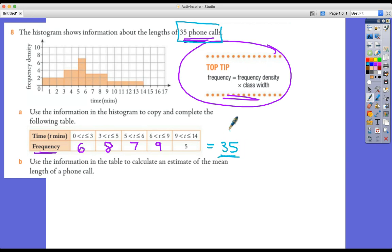Now the next bit, this is actually going back to a previous topic, which is finding an estimate of the mean from a frequency table. Now that's perfect because this is what I've got. In fact, it's a grouped frequency table, isn't it? So the trick here actually is to assume that each of these groups, in each of these groups, everybody had the median or the mean length phone call.